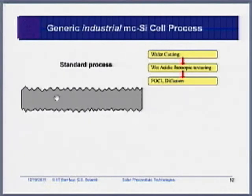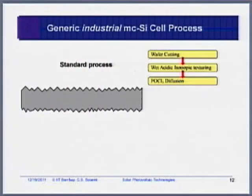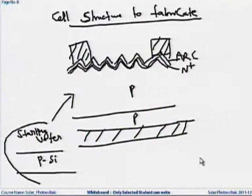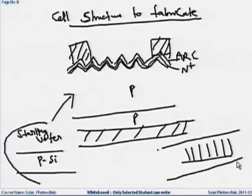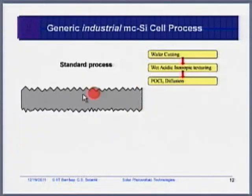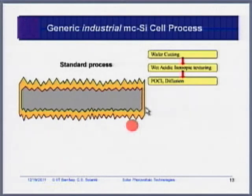We want the junction to be on only one side. What industry does is put 200–300 wafers together in a large furnace and expose them to a phosphorous-containing gas. The phosphorous-containing gas will go everywhere. So when doing this in the furnace with many wafers stacked on a board, you pass the phosphorous-containing gas through. As a result, your emitter forms everywhere.